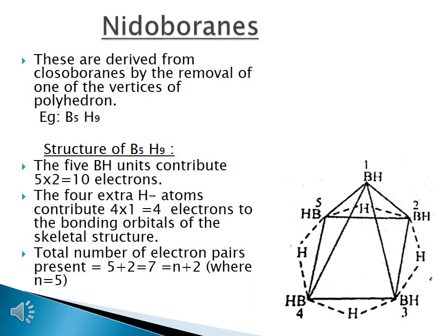The structure of nido boranes. These are derived from closo boranes by the removal of one of the vertices of the polyhedron. Example: B5H9. In this structure you can see 5 BH units which contribute 5 × 2 = 10 electrons, and the 4 extra hydrogens contribute 4 × 1 = 4 electrons to the bonding orbitals of the skeletal structure, giving a total of 14 electrons. Therefore, total electron pairs = 5 + 2 = 7 = N + 2 where N = 5.